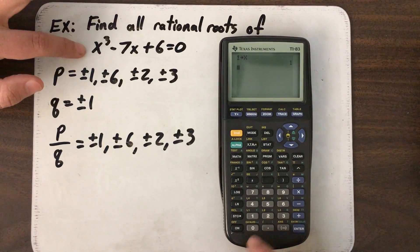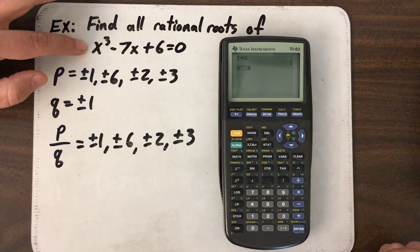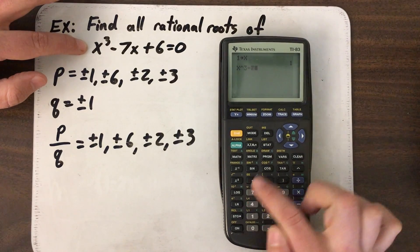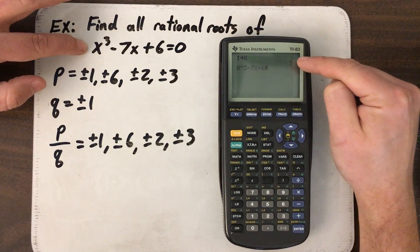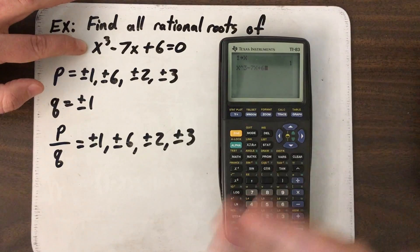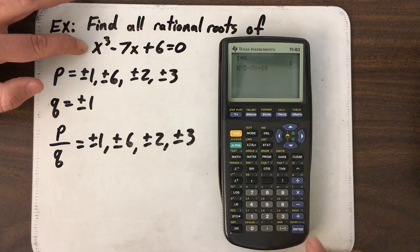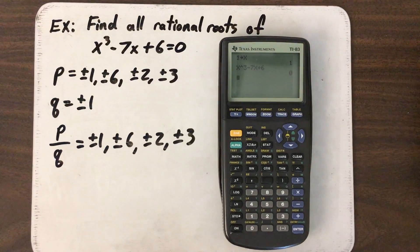So now I'm actually going to type this expression in. So X, and I'm going to use the caret, so X cubed, like that, minus 7X plus 6. The calculator's already stored one in for my X value, so when I press enter, the calculator will evaluate this for me. And what do you know? I get zero. So zero equals zero.